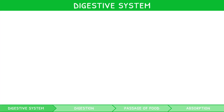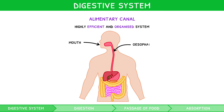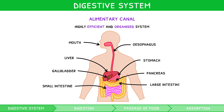All goods consumed by humans pass through the alimentary canal, a highly efficient and organised system within our body. For your IB Biology exam, you need to know the components, which are the mouth, the esophagus, the stomach, the liver, the gallbladder, the pancreas, the small intestine, the large intestine, the rectum, and the anus.